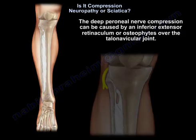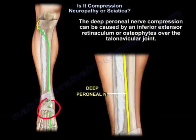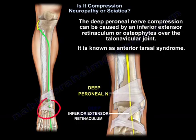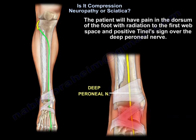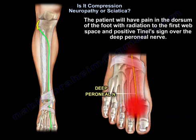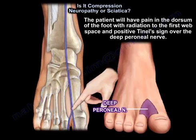Deep perineal nerve compression can be caused by an inferior extensor retinaculum or osteophytes over the talonavicular joint — this is known as anterior tarsal syndrome. The patient will have pain in the dorsum of the foot with radiation to the first web space and a positive Tinel's sign over the deep perineal nerve.